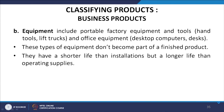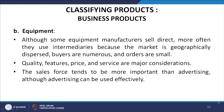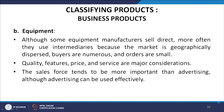Advertising is much less important than personal selling for installations. Equipment includes portable factory equipment and tools, hand tools, lift trucks, and office equipment like desktop computers, desks, and chairs. These do not become part of a finished product; they have a shorter life than installations but a longer life than operating supplies. Although some equipment manufacturers sell directly, more often they use intermediaries because the market is geographically dispersed, buyers are numerous, and orders are small. Quality, features, price, and service are major considerations.